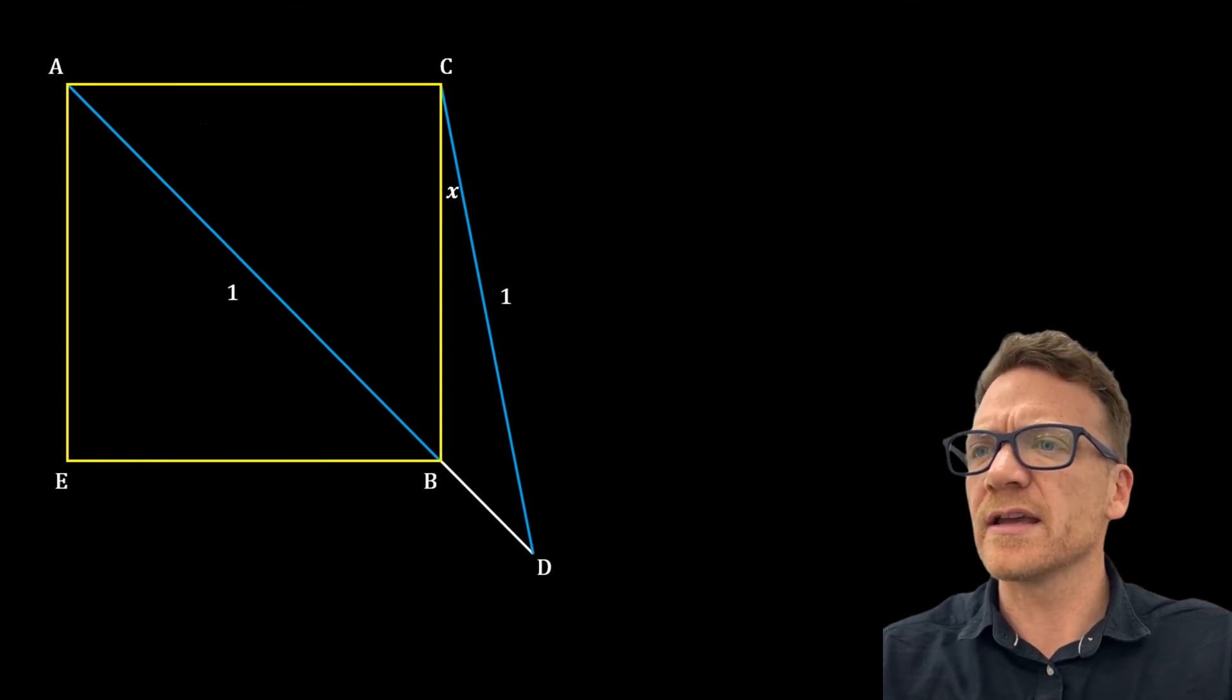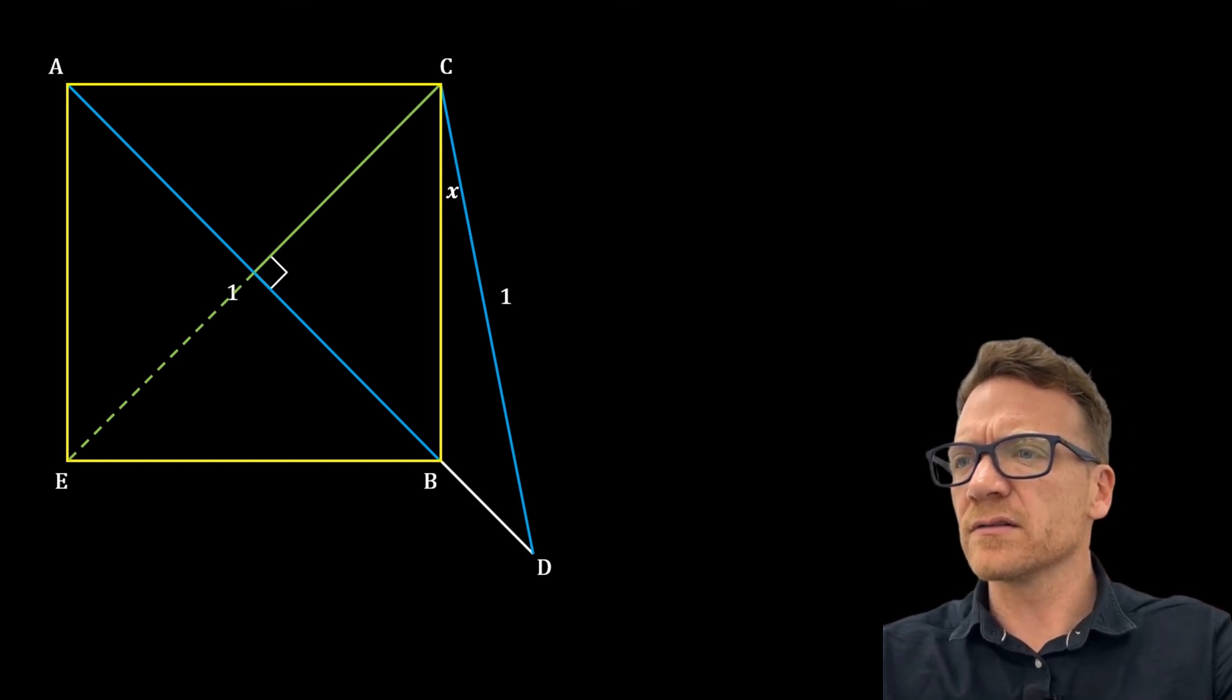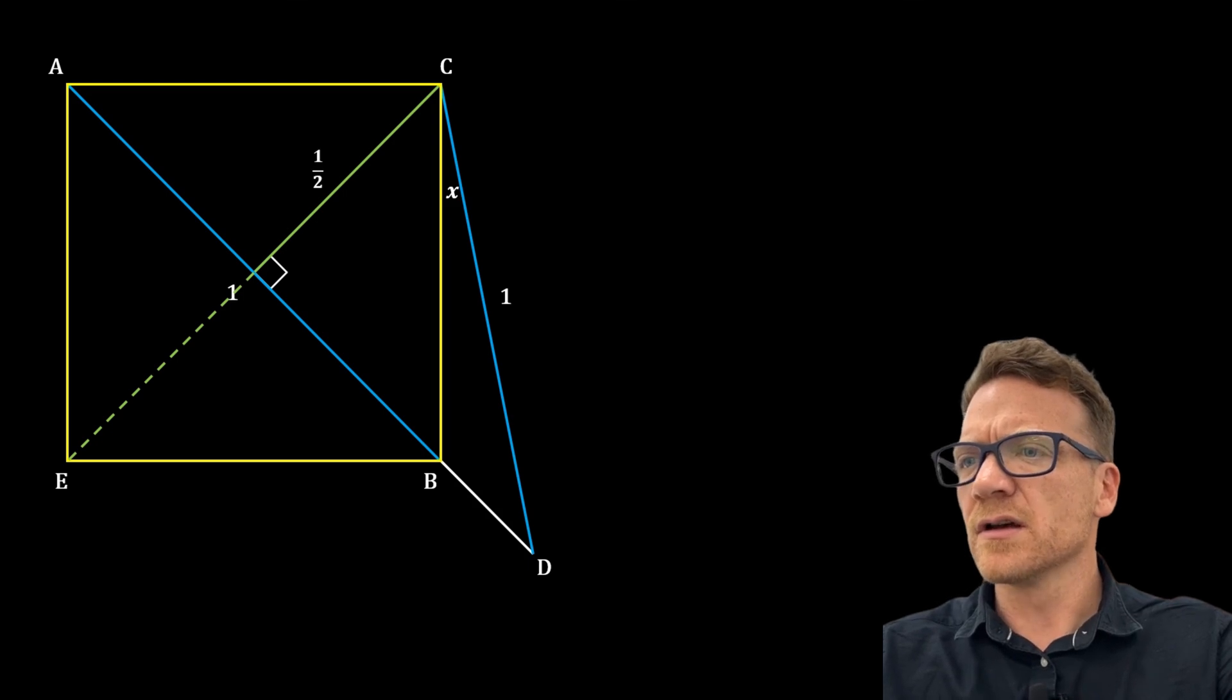First we can construct a diagonal line CE. Now we know that diagonals of a square are perpendicular bisectors, so the length of half of this diagonal is a half unit. We also know that diagonals of a square bisect the angle, so we also have a 45 degree angle.